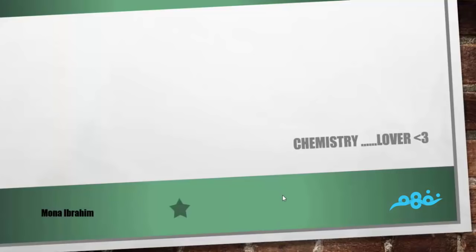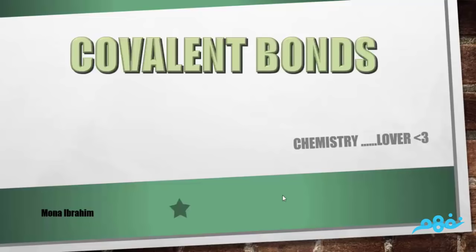Hey, what's up guys, this is Mona Ibrahim. Today we are going to talk about a very important kind of bond in chemistry, which is covalent bonds. Covalent bonds are bonds depending on sharing electrons in the molecule.